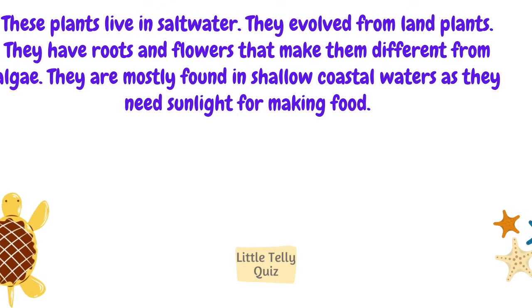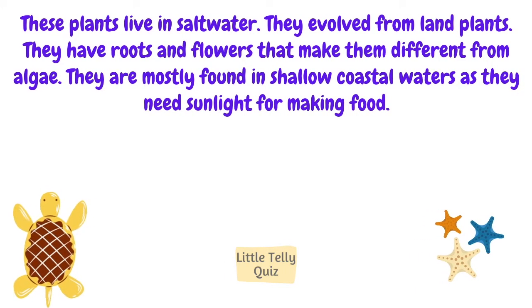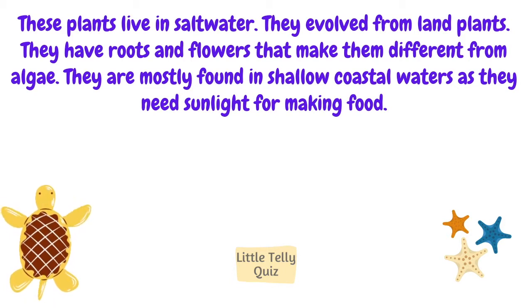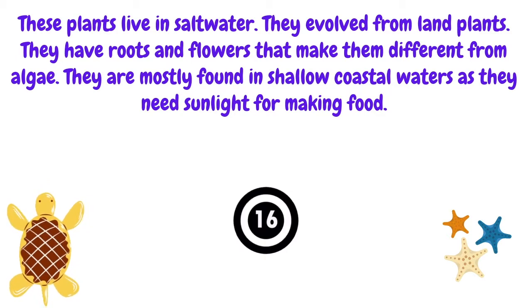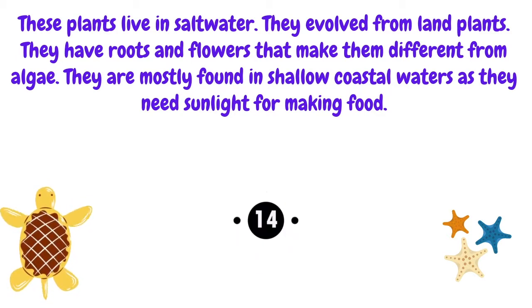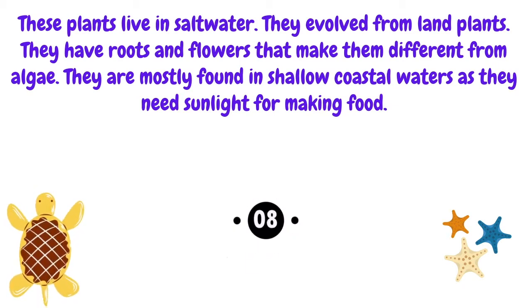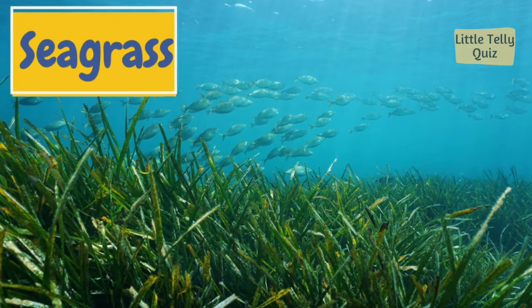These plants live in salt water. They evolved from land plants. They have roots and flowers that make them different from algae. They are mostly found in shallow coastal waters as they need sunlight for making food. The answer is sea grass.